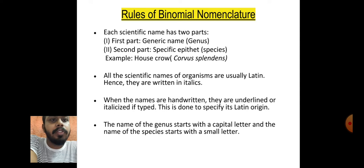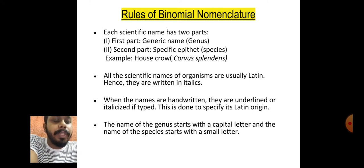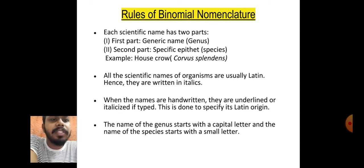Now let's discuss the rules of binomial nomenclature. The first rule is that each scientific name has two parts: the generic name (genus name) and the specific epithet (species name). For example, for the house crow, the scientific name is Corvus splendens — 'Corvus' is the genus name and 'splendens' is the species name.